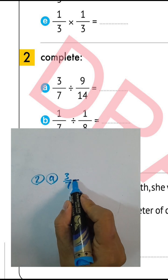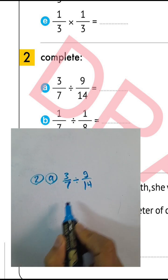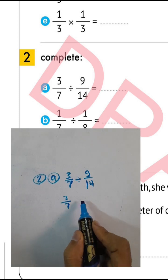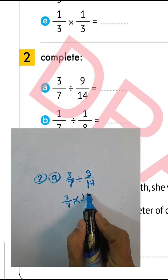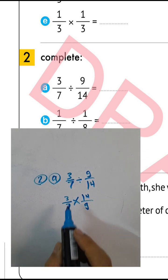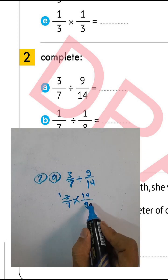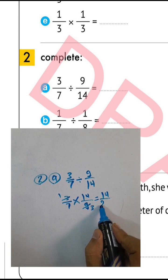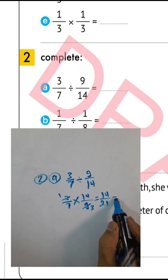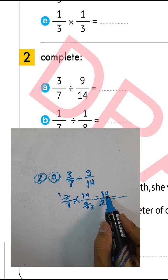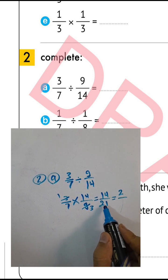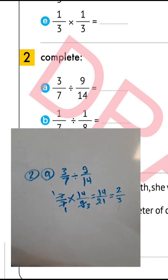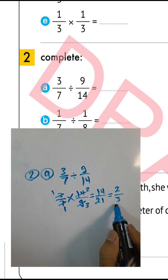Letter E: three over seven divided by nine over fourteen. Convert from division to multiplication and write fourteen over nine. Simplify: three divided by three equals one, nine divided by three equals three. One times fourteen equals fourteen, three times seven equals twenty-one. Then divide by seven: fourteen divided by seven equals two, twenty-one divided by seven equals three. The result is two over three.